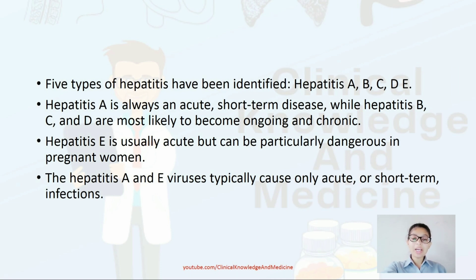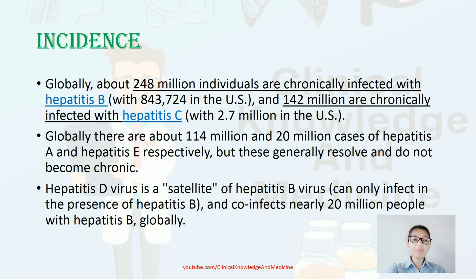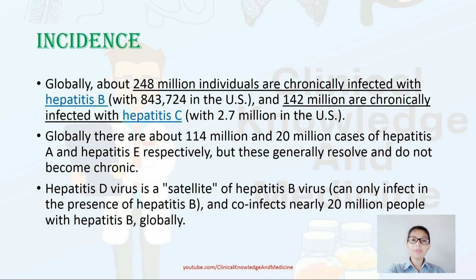Hepatitis A and E viruses typically cause only acute or short-term infections. Globally, about 248 million individuals are chronically affected with hepatitis B and 142 million people are affected with hepatitis C. There are 114 million and 20 million cases of hepatitis A and E respectively, but these generally do not become chronic.